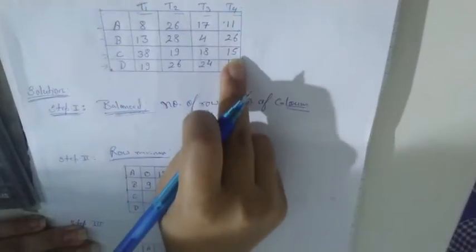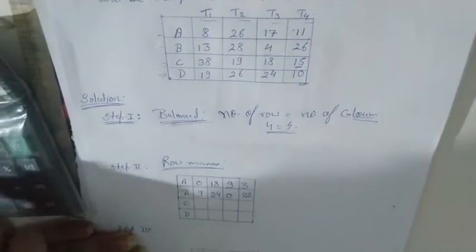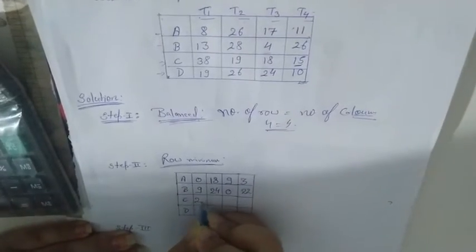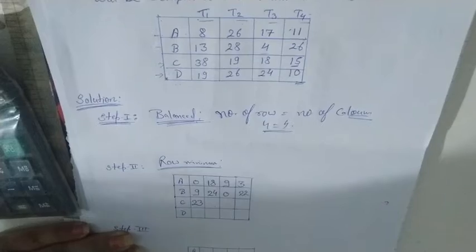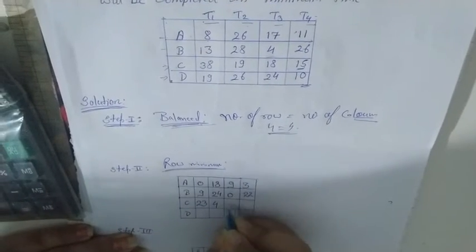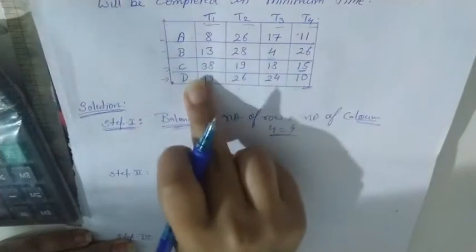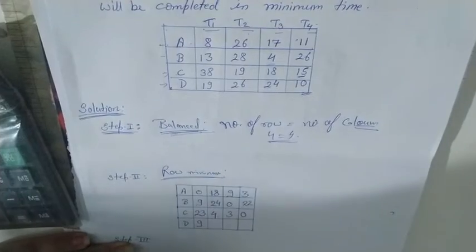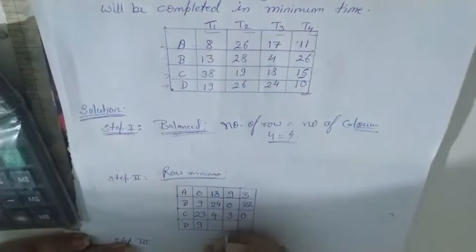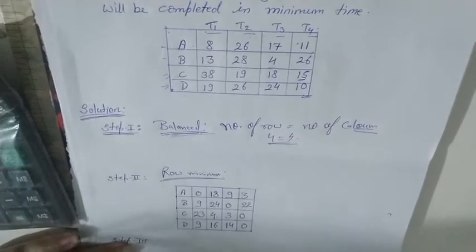The third row minimum element is 15: 38 minus 15 is 23, 19 minus 15 is 4, 18 minus 15 is 3, and 15 minus 15 is 0. The fourth row minimum element is 10: 19 minus 10 is 9, 26 minus 10 is 16, 14 minus 10 is 4, and 10 minus 10 is 0.